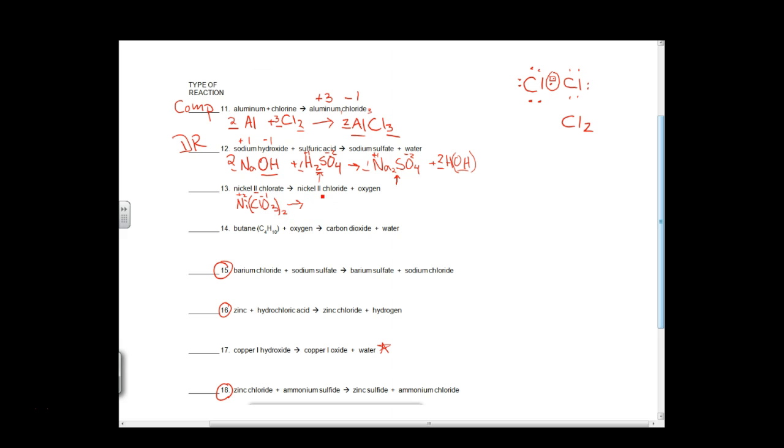It's going to break down into nickel 2 chloride. So nickel is still Ni, still a plus 2. Chlorine is Cl, it's a minus 1. So NiCl2 plus oxygen, and it's one of those diatomics, so it's always together with another O, so we are ready to go. Ni(ClO3)2 breaks apart into NiCl2 plus O2.